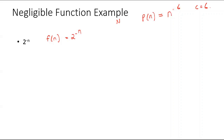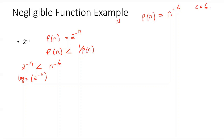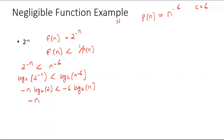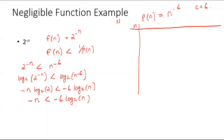From the definition of negligible functions, f(n) has to be less than 1/p(n), so 2^(-n) has to be less than n^(-6). Taking log base 2 on both sides gives: log₂(2^(-n)) < log₂(n^(-6)), which becomes -n·log₂(2) < -6·log₂(n), and since log₂(2) = 1, we get -n < -6·log₂(n). Now let's find the value of n for which this condition is true.